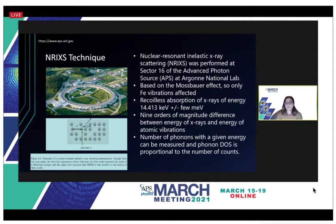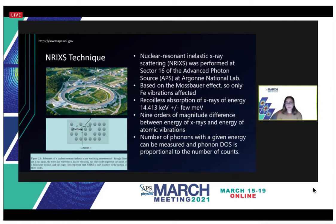The blue circles represent the nuclei of the iron-57 isotope. The straight line pointing upwards is the x-ray energy that produces the lattice vibrations, characterized by the wavy line. For every 20 nanoseconds the radiation is pulsed, relative to the decay time of the previous energies. After conducting this experiment we produce a phonon density of states to measure the intensity of phonons at a given energy level, found to be proportional to the number of counts.